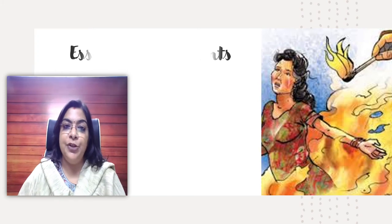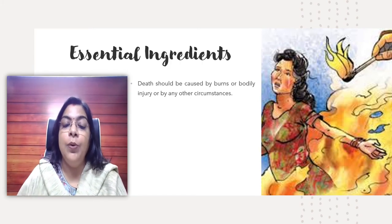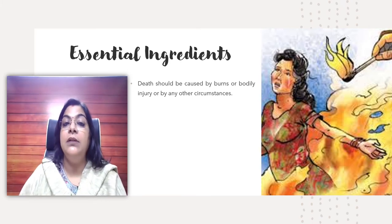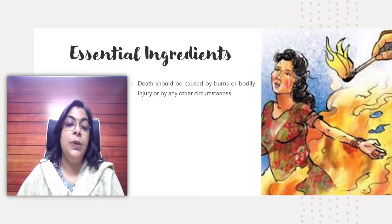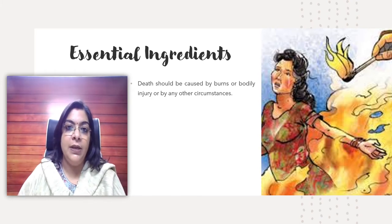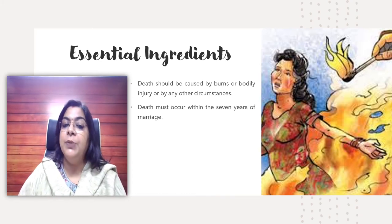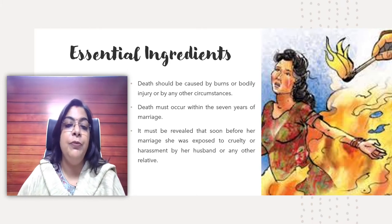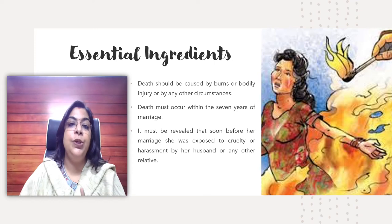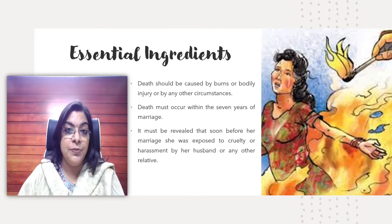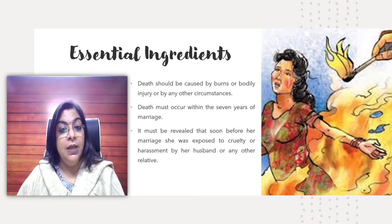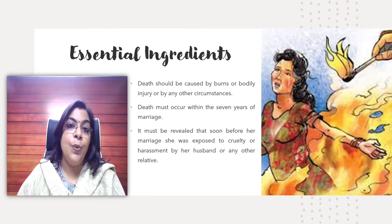The basic ingredients of section 304b are: first, the death must be caused by burns, bodily injury, or any other circumstances — including suicide. Whenever there is a death of a bride within seven years of marriage, that will generally be considered a dowry death. Second, the death must occur within seven years of marriage. Third, it must be shown that soon before her death she was exposed to cruelty or harassment, either by her husband, her husband's relatives, or both.